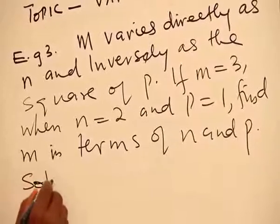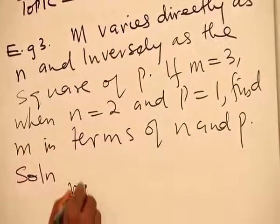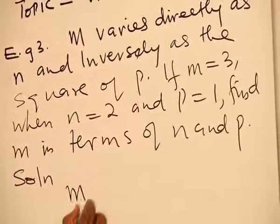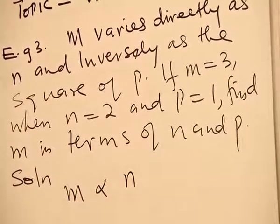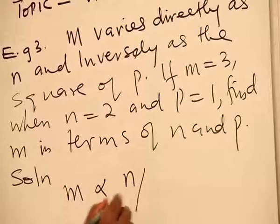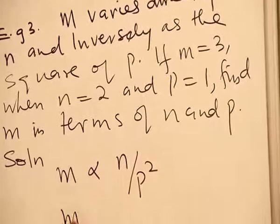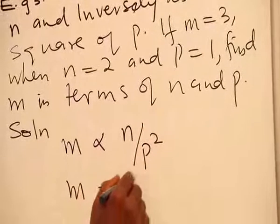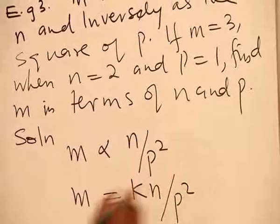Solution: Here, M varies directly as N and inversely as the square of P. It therefore means that M is equal to KN all over P squared.